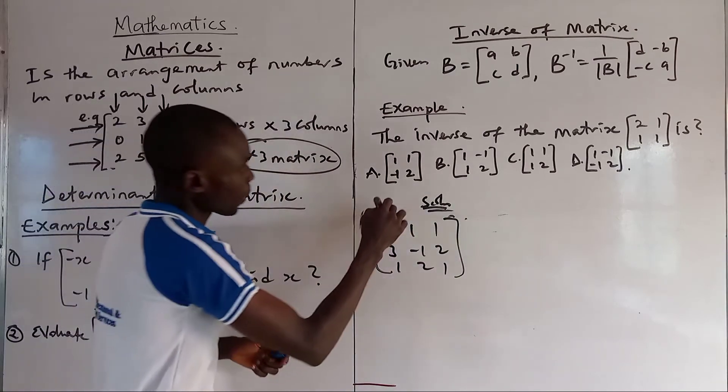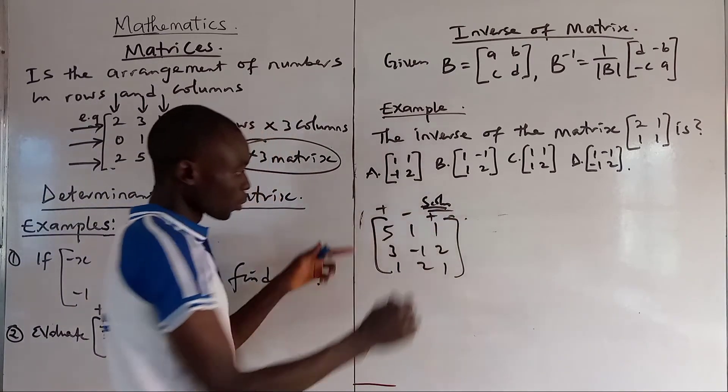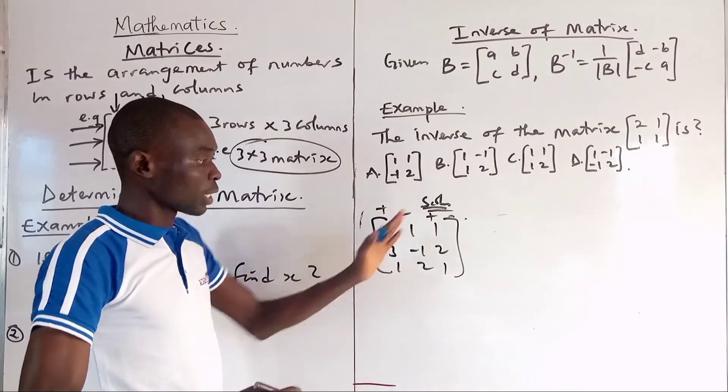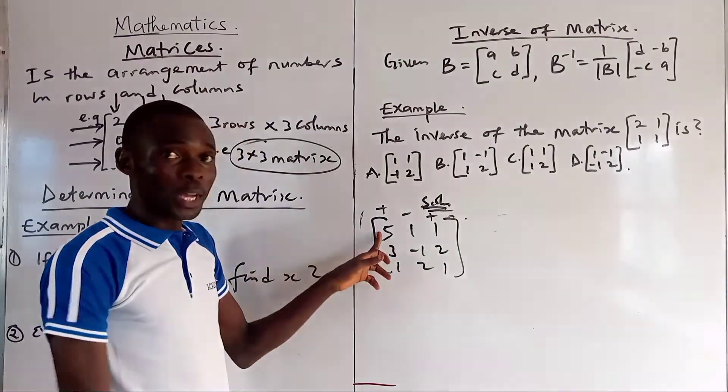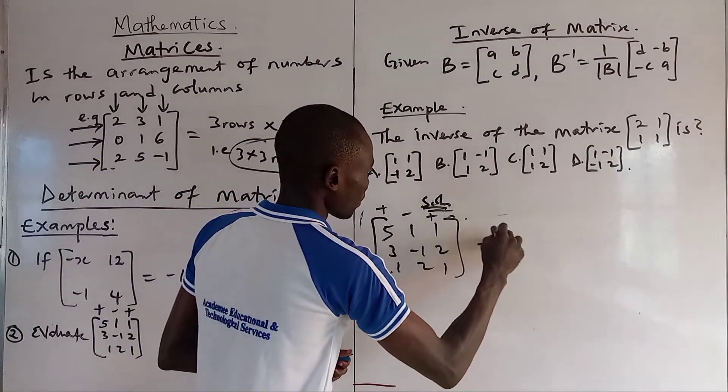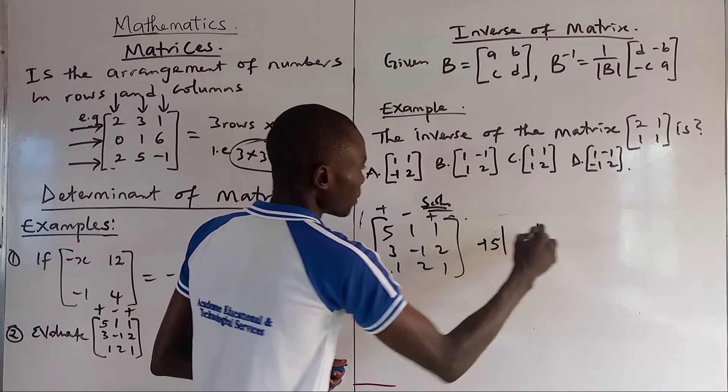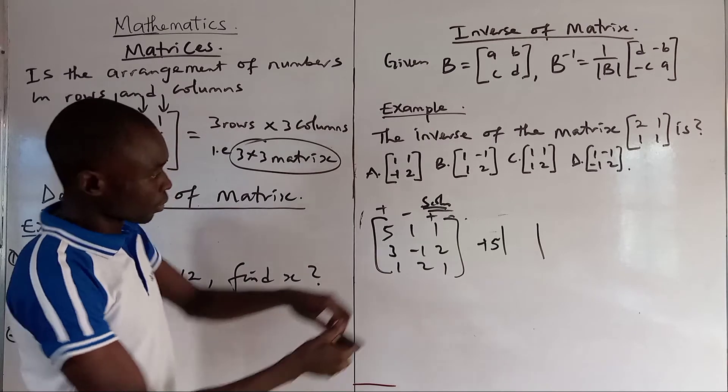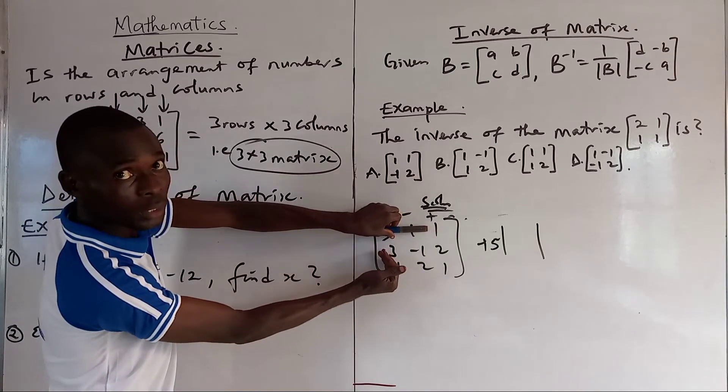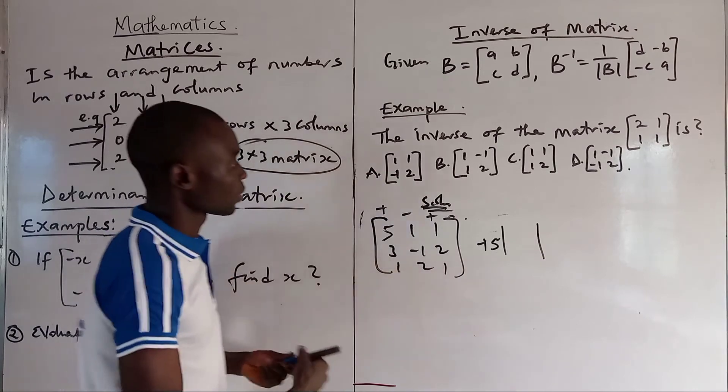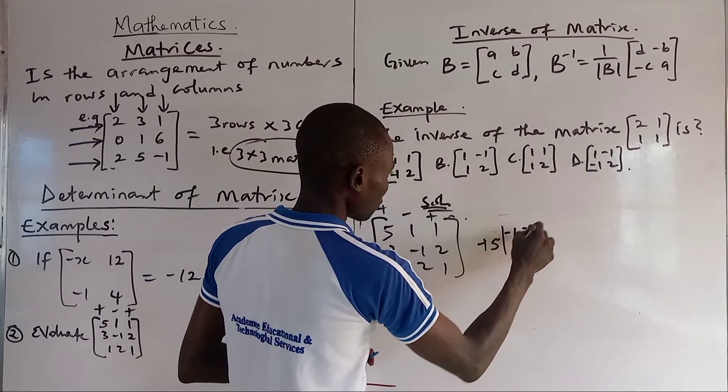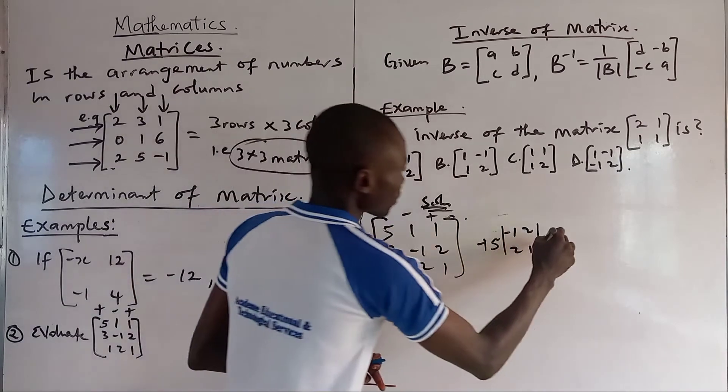You apply plus, minus, plus to the first row because we are using it to generate the minor of the matrices. Now, to the first number here, 5, you say plus 5. We want to get the minor. How do we get the minor? You cover here and you cover this. Then we are going to be left with minus 1, 2, 2, 1. So minus 1, 2, 2, 1. So we are having minus 1, minus 1.